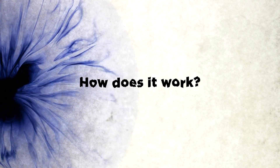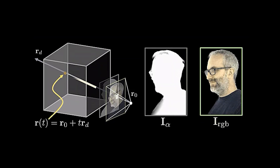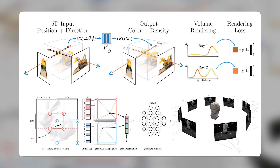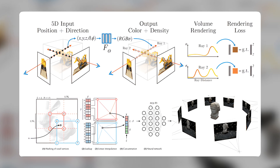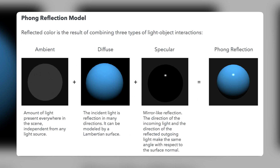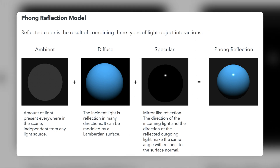How does it work? Facelit works by using a neural volume representation to encode the 3D shape and appearance of a face in a compact and continuous way. A neural volume is a function that maps a 3D point to a feature vector that represents its color and opacity. Facelit learns this function from a large dataset of face images using a deep neural network.